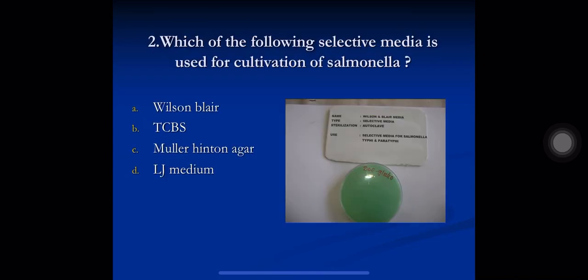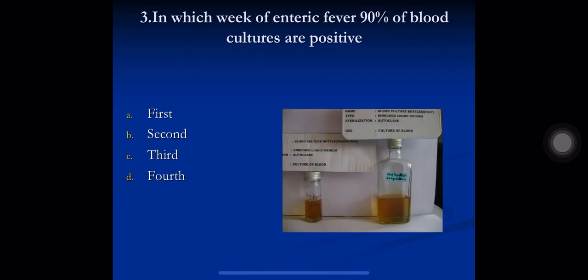Question 2: which of the following selective media is used for cultivation of Salmonella? A) Wilson and Blair, B) TCVS, C) Muller Hinton agar, and D) LJ medium. The correct option is A) Wilson and Blair medium, which is used as a selective medium for Salmonella.